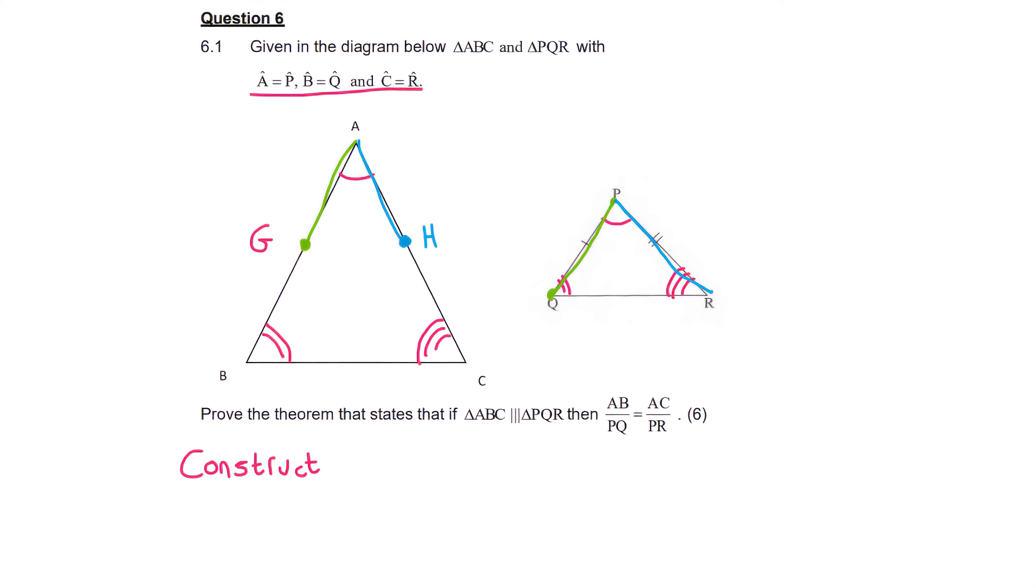So what we're going to say is that we are going to construct line GH, such that AG is the same length as PQ, and AH is the same length as PR. Okay, and so there's our construction line that we've done there.